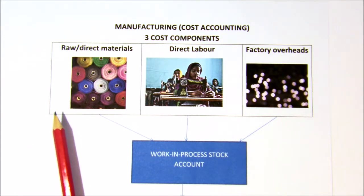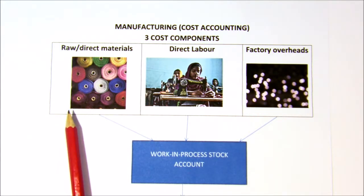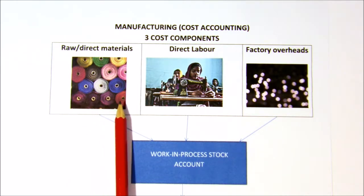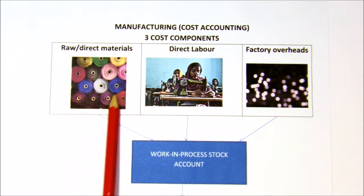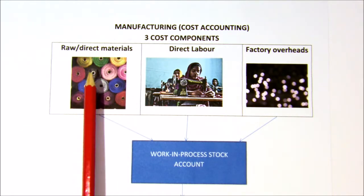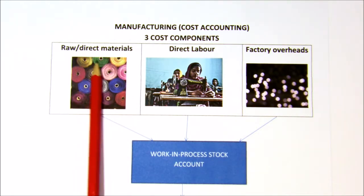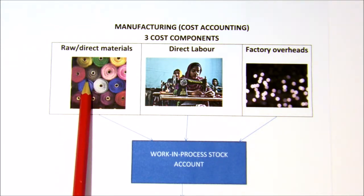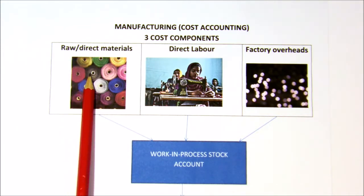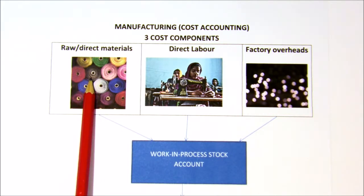These three cost components will either be assessed in the form of separate ledger accounts, or when you get to Grade 12 it'll be in the form of notes. The first thing we need to look at is raw materials. Raw materials aren't only rolls of material — it could be cottons, zips, labels, and so on. All of these raw materials actually go into the goods, so you can physically see the label, cotton, and so on.